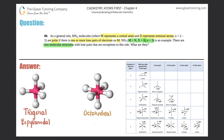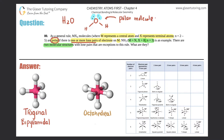Basically, any molecular structure in which the central atom has one or more lone pairs is deemed polar. For example, H2O has oxygen in the middle surrounded by two hydrogens — one on each side — and two lone pairs. Since it has one or more lone pairs, it is automatically classified as a polar molecule.